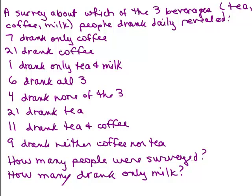Seven drank only coffee. Twenty-one drank coffee. One drank only tea and milk. Six drank all three. Four drank none of the three. Twenty-one drank tea. Eleven drank tea and coffee. Nine drank neither coffee nor tea.